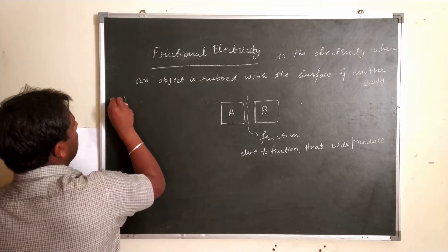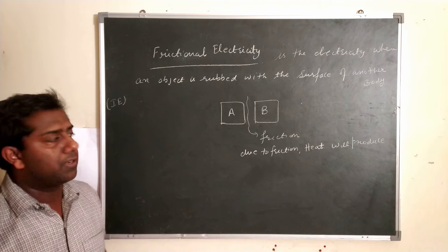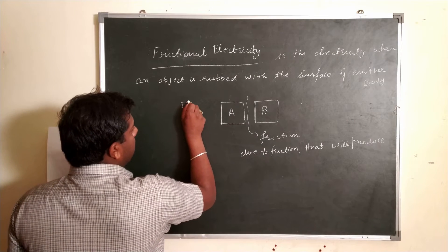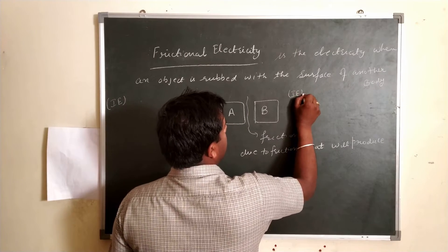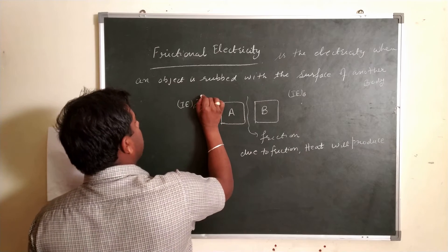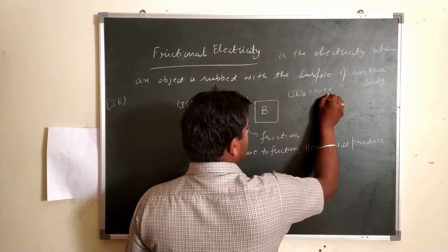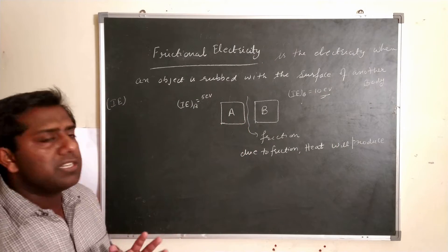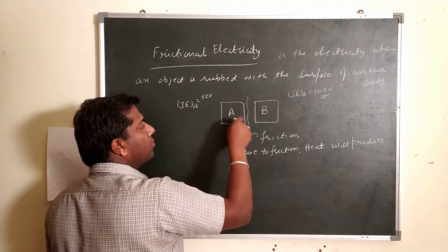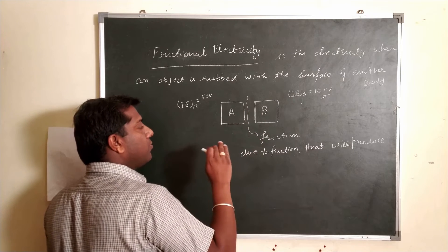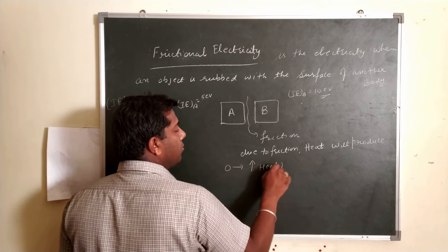What is the meaning of ionization energy? It is the amount of energy required to release an electron from the outermost shell of an atom. Suppose material A has ionization energy IE_A and material B has ionization energy IE_B. Suppose IE_A is 5 electron volts and IE_B is 10 electron volts. Initially there is no heat between A and B, but when we start rubbing, heat between A and B will start from zero and will increase.